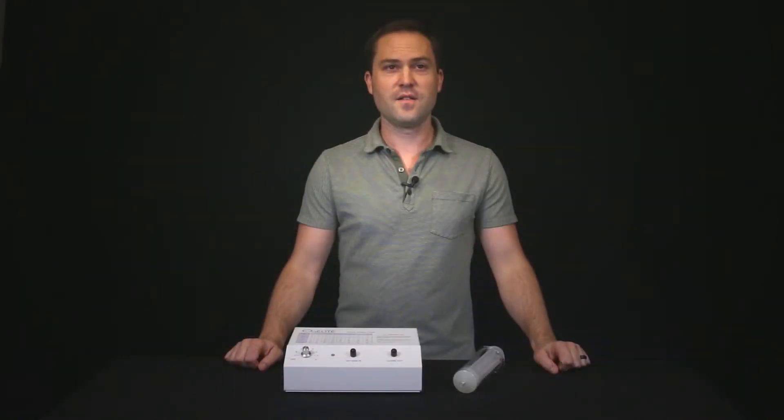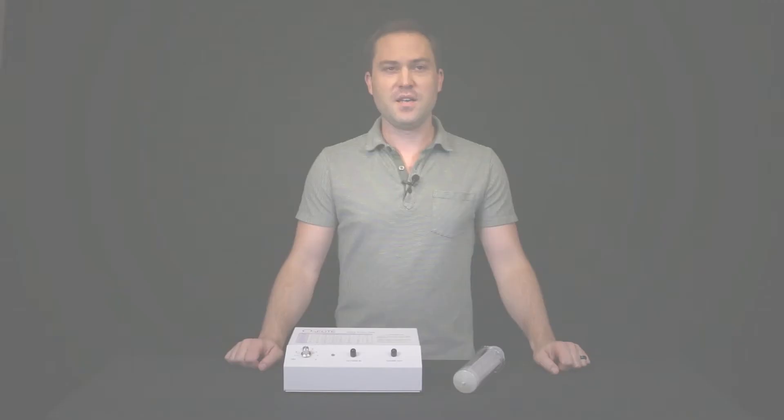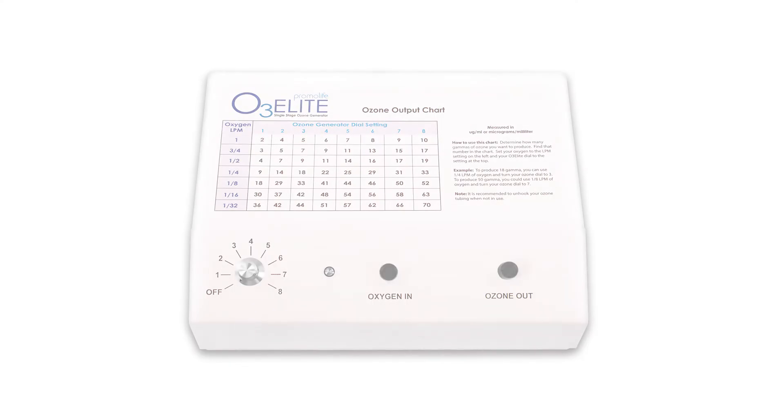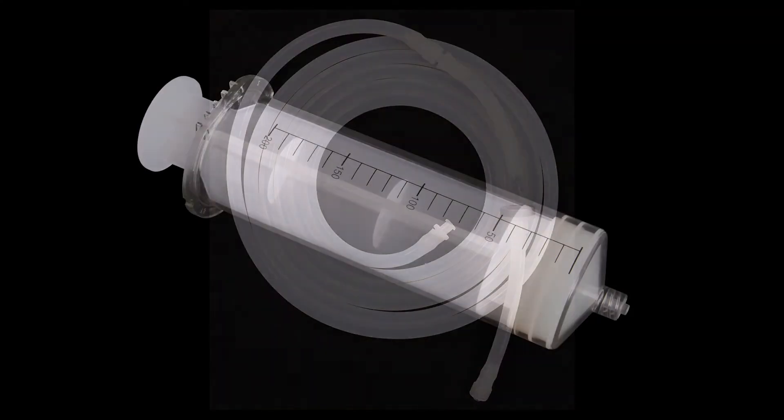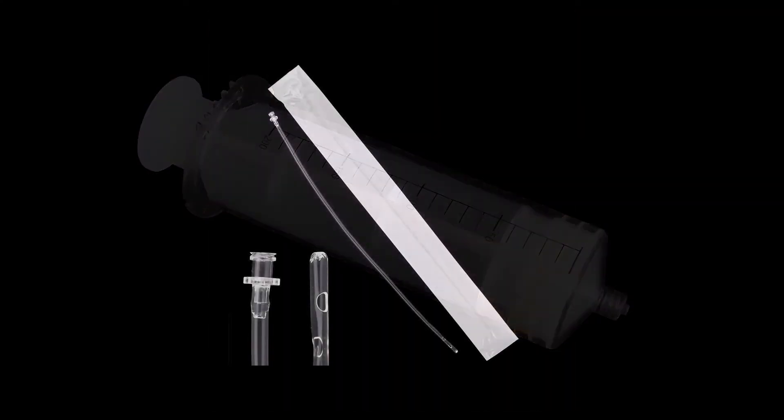To begin, first make sure you have all the accessories needed. These include an O3Elite single ozone generator, tubing with a check valve attached to 5 feet of silicone tubing, an ozone syringe, and a catheter.